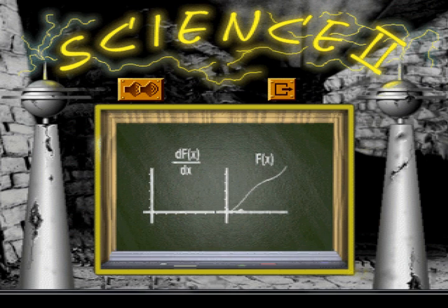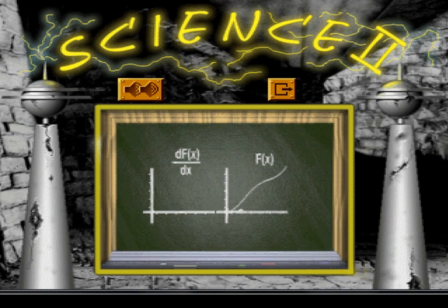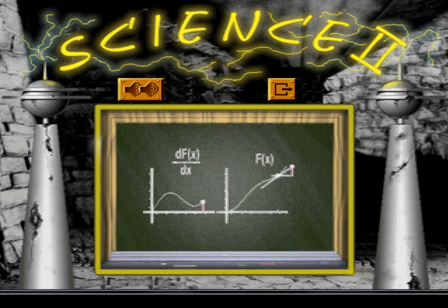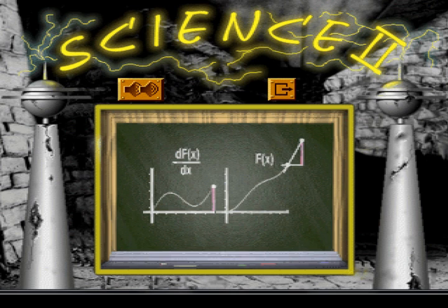Move your mouse left and right to graph the steepness of the curve. Graphing the steepness or slope of a curve is called taking the derivative. Notice how this reverses the process of integration.